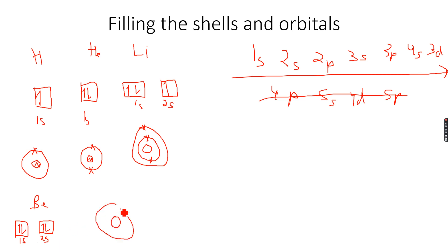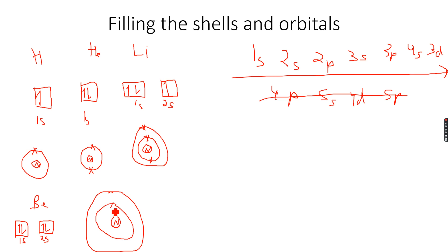When we draw the atomic structure for beryllium, we have two electrons in 1s and two electrons in 2s, giving four electrons in total. This is how we apply the orbital filling order to build up the electron configurations element by element.